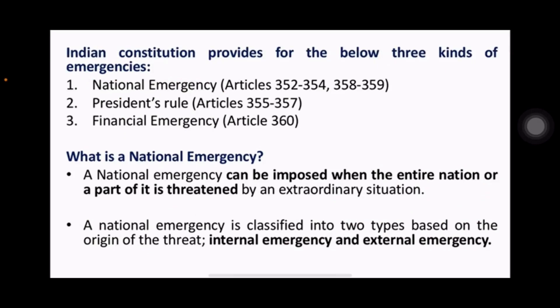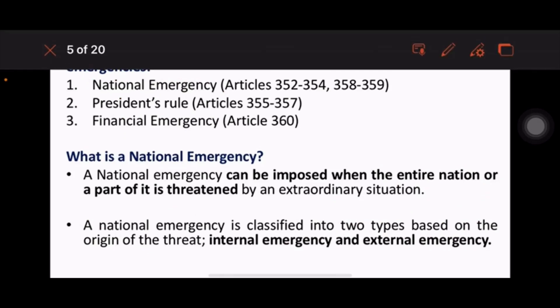The Indian constitution provides three kinds of emergency — this is very important. They are: national emergency, president's rule, and financial emergency. National emergency covers Articles 352 to 354, president's rule covers Articles 355 to 357, and financial emergency is covered under Article 360.